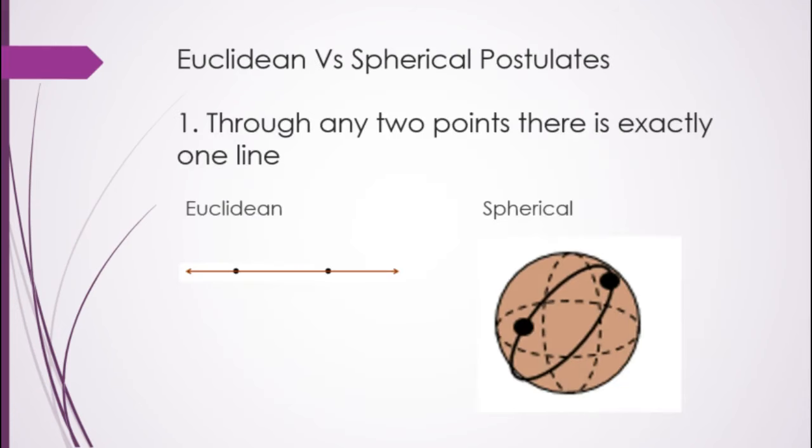So, things that are the same. Number one, through any two points, there is exactly one line. One line, or one great circle, because we said great circles are the same as lines.